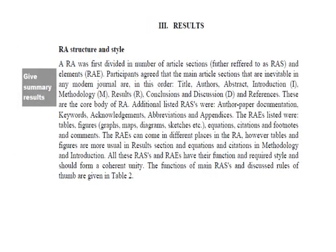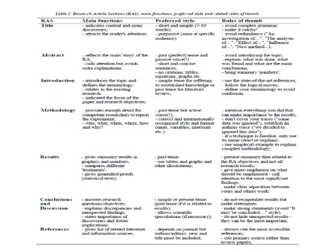Number three is results: give a summary of results. Table 2 covers the research article structure and styles, listing the main functions, preferred style, and related rules of thumb for the abstract, introduction, methodology, results, conclusions and discussions, and references.